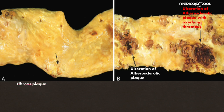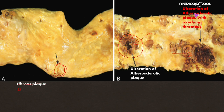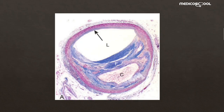Here we can see the atherosclerotic plaque, the ulcerated atherosclerotic plaque, and when thrombus is superimposed on this ulcerated plaque, it imparts a red-brown discoloration. This image shows the ulceration of the atherosclerotic plaque with overlying thrombus. Another picture shows the atherosclerotic plaque with an eccentric appearance as discussed — only a portion of the artery is involved.